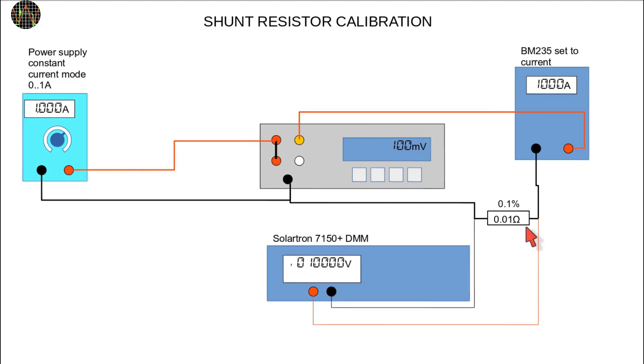I use an external 0.01 ohm shunt resistor with 0.1% tolerance and the solatron measures the voltage drop across this shunt instead. This means that the target of 1A reads as 10mV on the solatron's display.